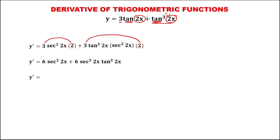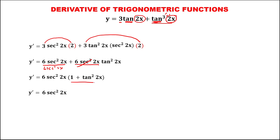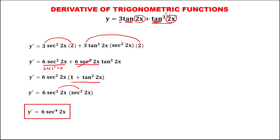Observe that there is a common factor six secant squared two x — put this outside. Dividing by six secant squared two x gives one plus tangent squared two x. Then to simplify, since one plus tangent squared two x equals secant squared two x by the Pythagorean identity, we have y prime equals six secant squared two x times secant squared two x — adding the exponents — therefore the derivative is equal to six secant to the power four of two x.